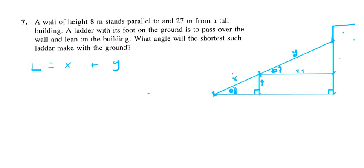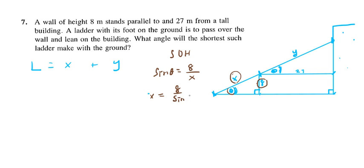How can we relate x, theta, and the given value 8 for this little triangle? Well, 8 is the opposite side and x is the hypotenuse, so that's the sine function. Sine of theta equals opposite over hypotenuse, which is 8 over x. So x equals 8 over sine theta, which we write as 8 cosecant theta. So L includes the term 8 cosecant theta for the x portion.